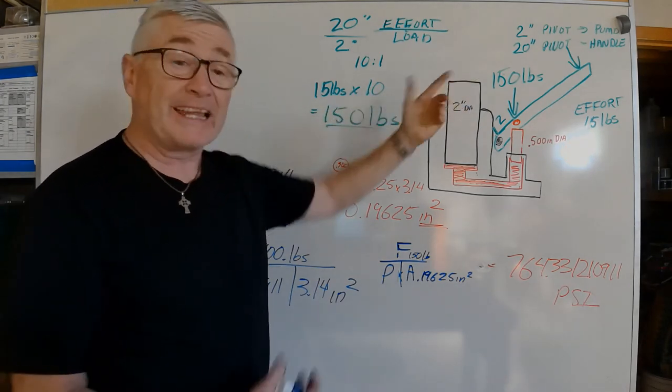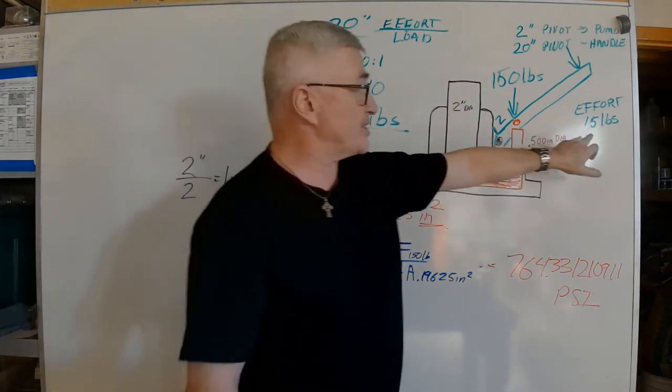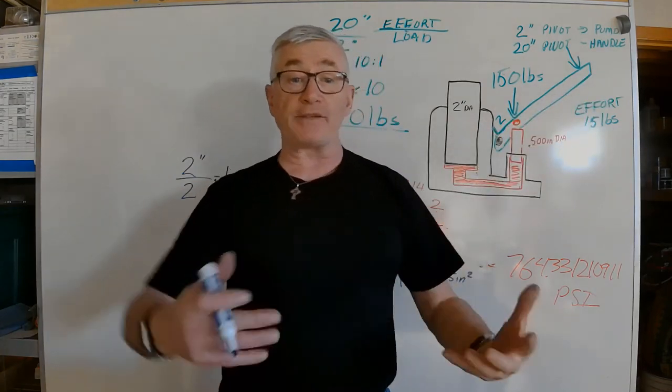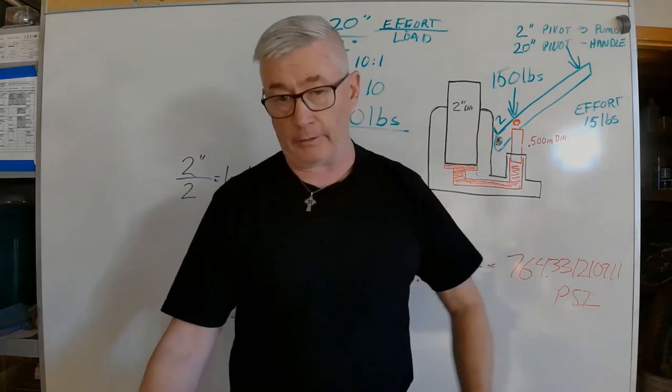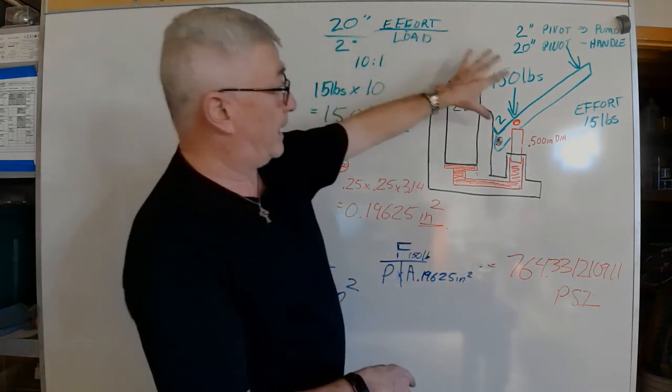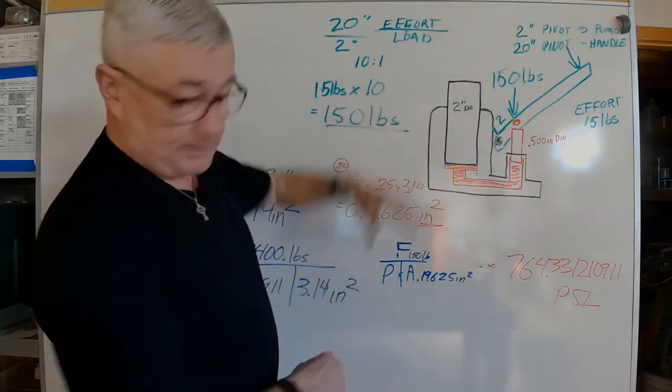We know that we can lift 2400 pounds, which is a little over a ton, with just a 15 pound effort at the end of my hand. So that is what the jack could lift.